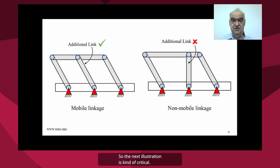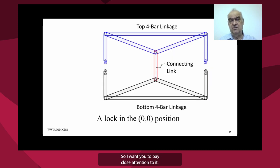So the next illustration is kind of critical. So I want you to pay close attention to it. The top four bar linkage has three vertical links, which allow the top triangular structure to move back and forth freely.